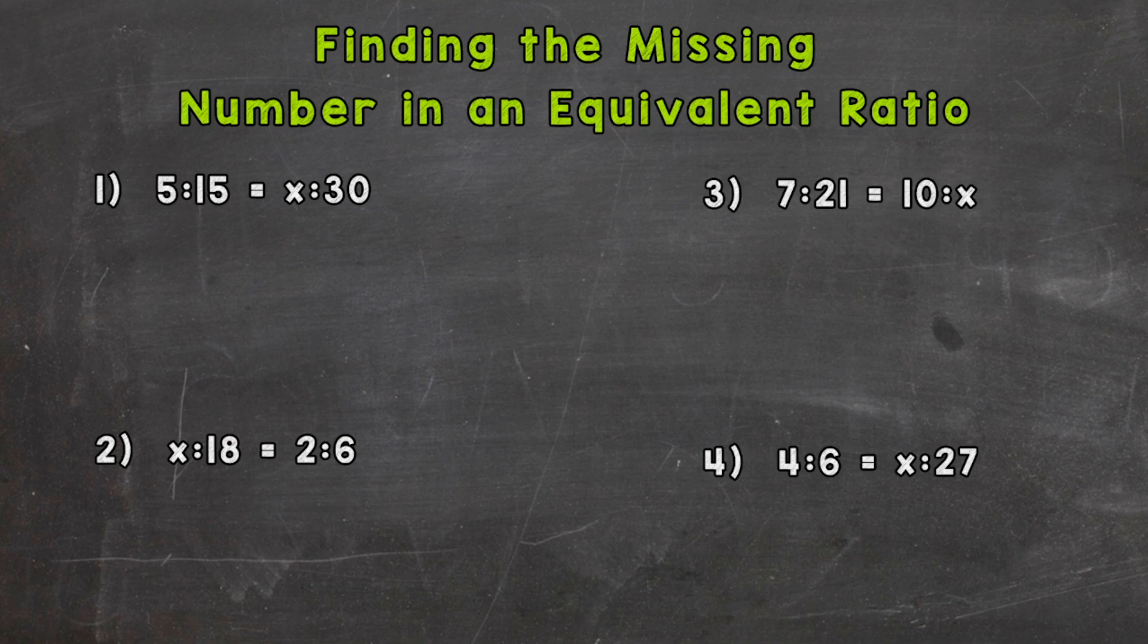Let's take a look at number one where we have 5 to 15 equals x to 30, and that x is our variable or missing piece. For these equivalent ratio problems, we can either use multiplication or division. Let's take a look at what we're given: 5 to 15 and a 30. Remember in ratios, order matters, so this 15 goes with the 30.